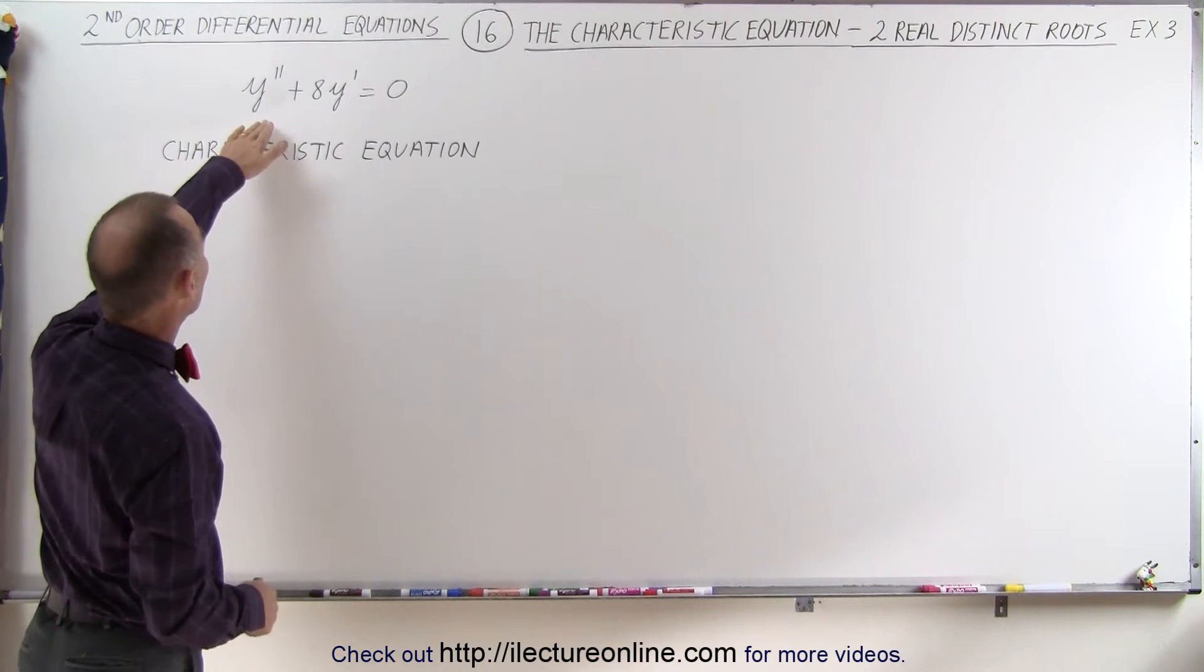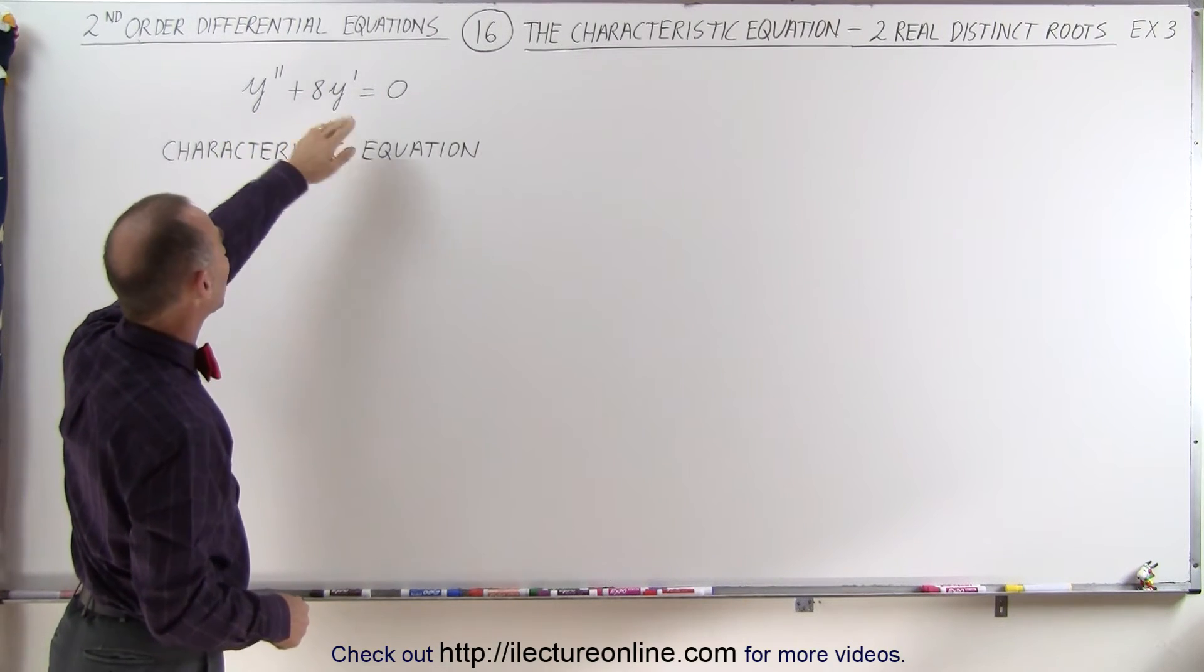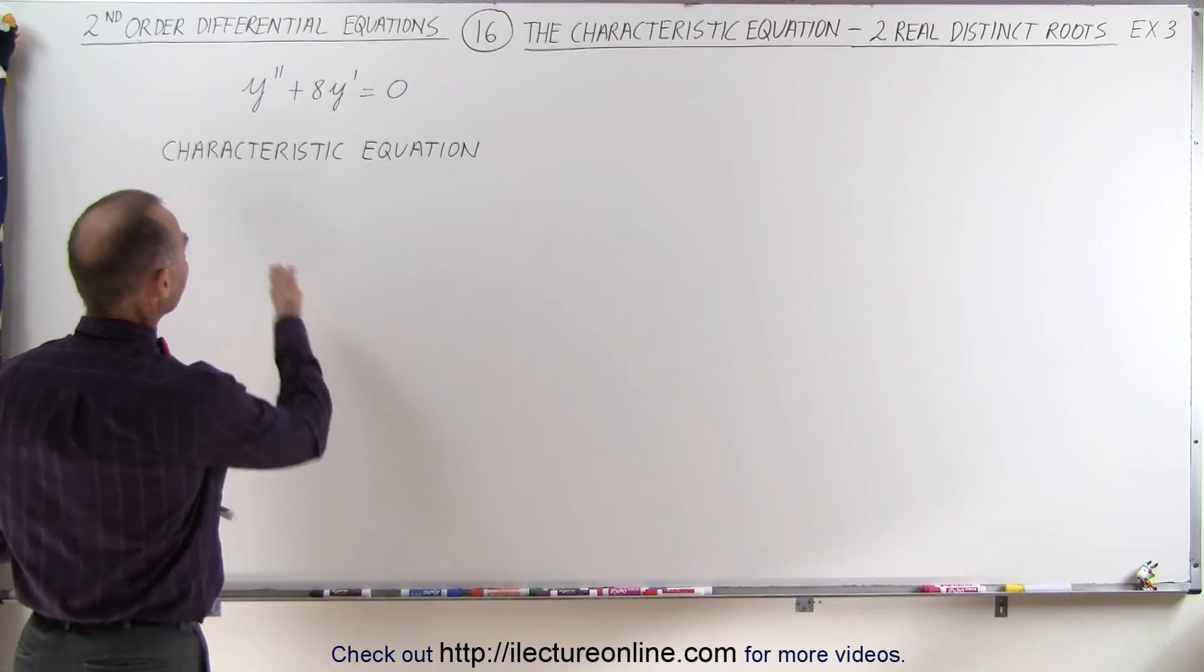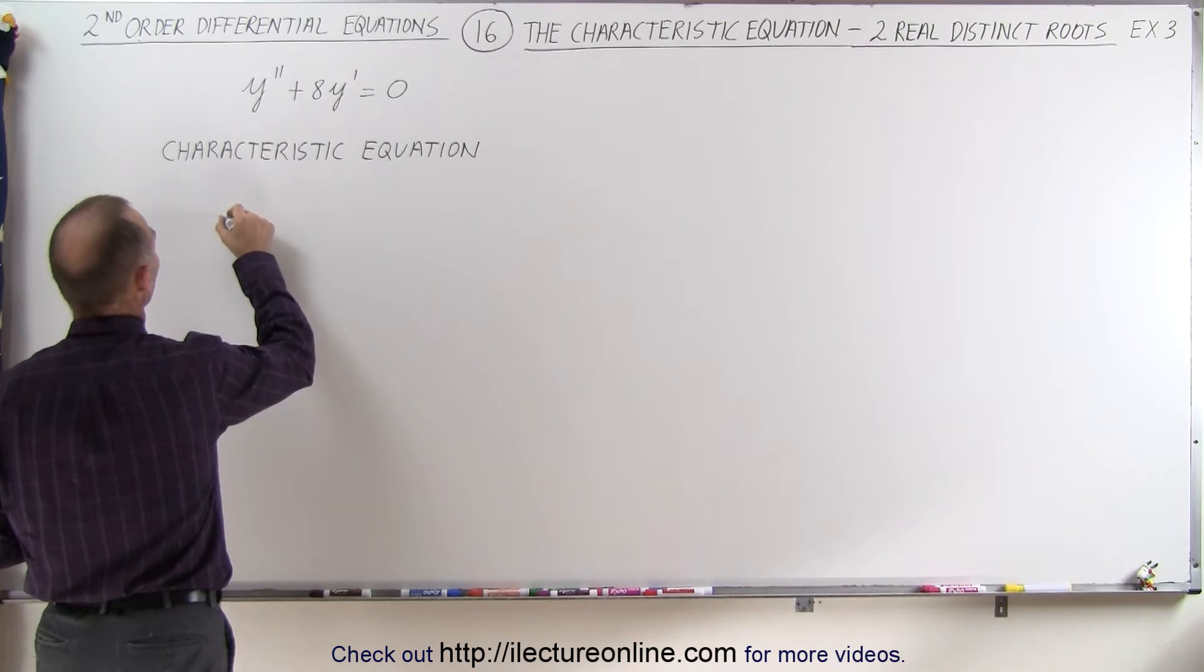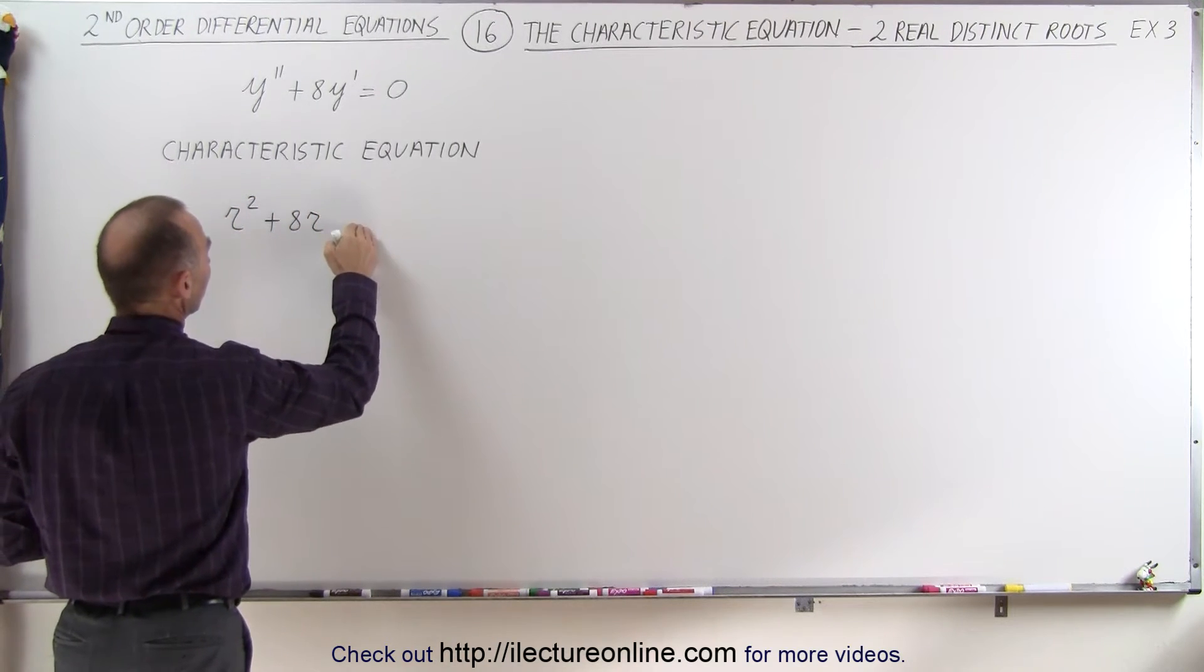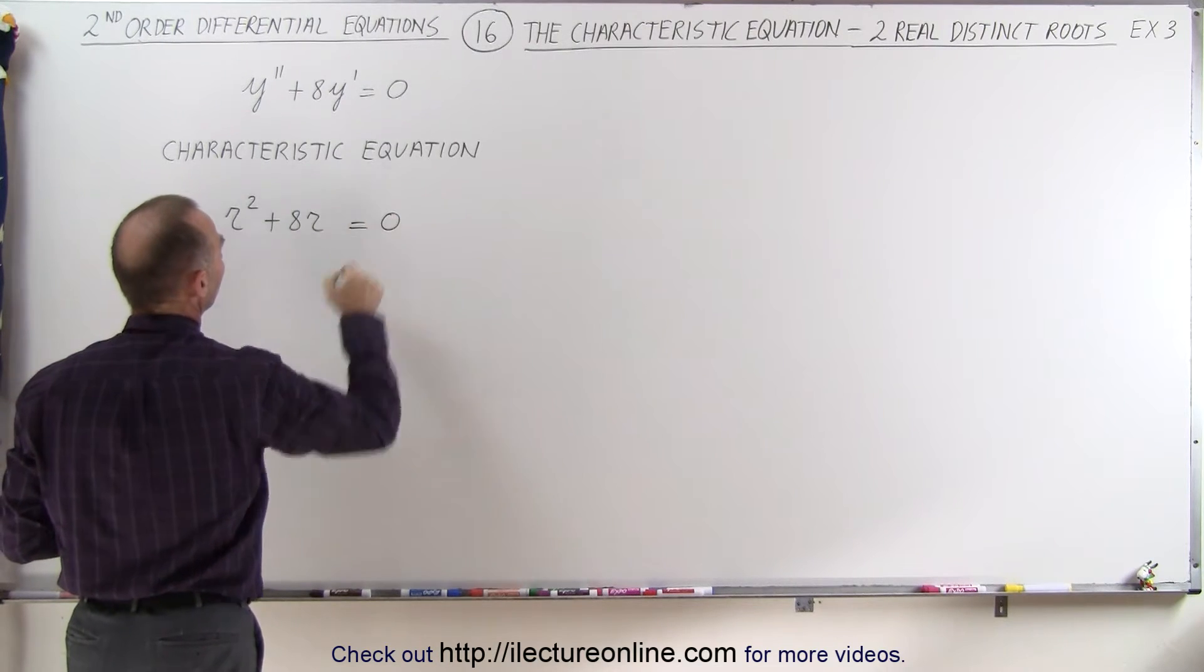So we start out with a differential equation that has y double prime plus 8y prime equals zero. The characteristic equation for that will be as follows: it will be r squared plus 8 times r, the constant term is missing, equal zero.